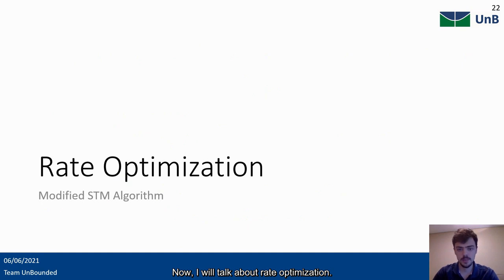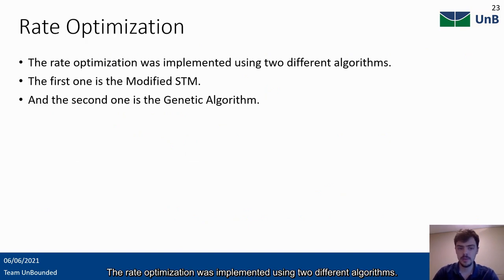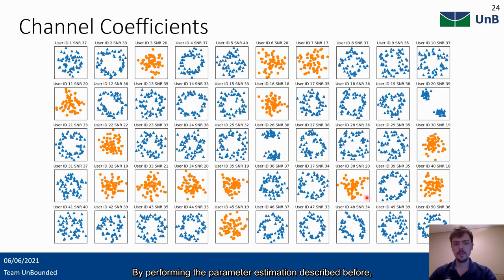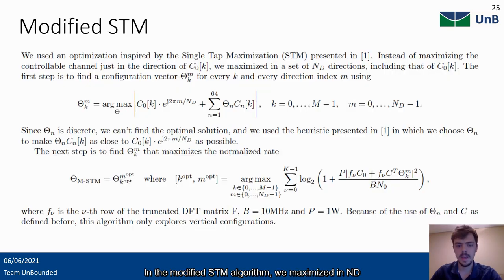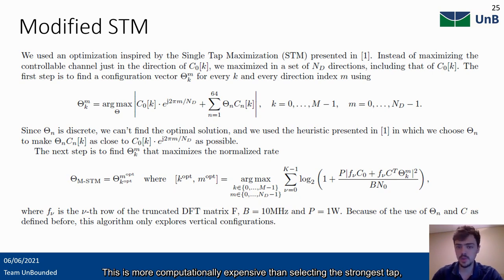Now I'll talk about rate optimization. The rate optimization was implemented using two different algorithms. The first one is the modified STM, and the second one is the genetic algorithm. By performing the parameter estimation described before, we get the following coefficients. We do not show c0 here. The orange circles are for n-loss users, and the blue triangles are for loss users. STM tries to align all these coefficients in the direction of c0. In the modified STM algorithm, we maximize in ND different directions, including the one of c0 and for every tab k. Then, we choose the direction and tab whose configuration yielded the best rate. This is more computationally expensive than selecting the strongest tab, but we decided to do it this way since we wanted the best rate.